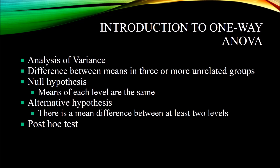A one-way analysis of variance is applicable for three or more groups. If you only have two groups, you can still use analysis of variance, and this would give you the same result as an independent samples t-test. With an independent samples t-test, you have a dichotomous independent variable, two groups, one independent variable, and it produces a probability value. With ANOVA, if you only used two levels of one independent variable, you would get the same probability value.